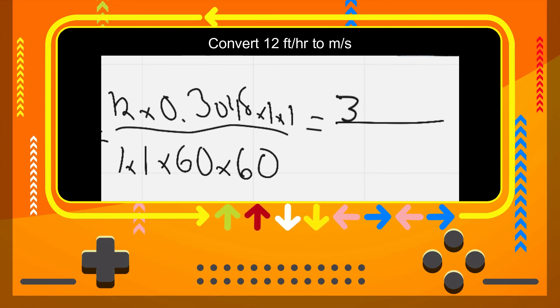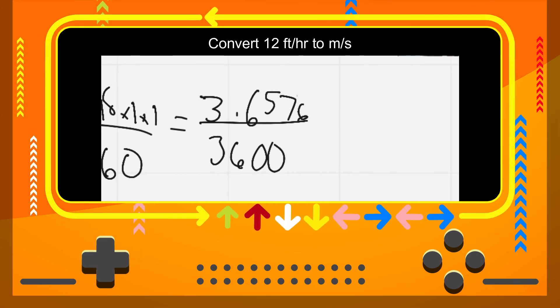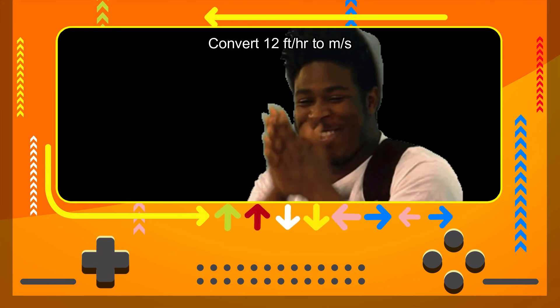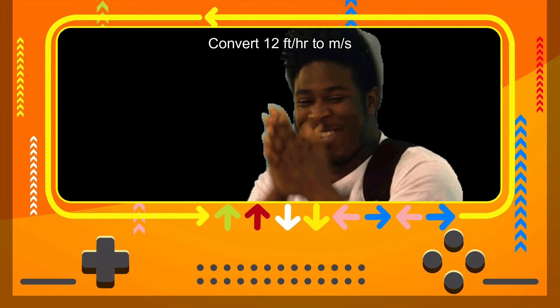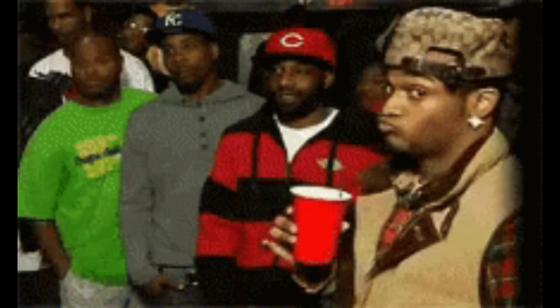So now top number is going to be 3.6576, my bottom number will be 3600. And then from here once you multiply across, I just need to divide. So I'm going to divide 3.6576 by 3600, and what does that give me? My final answer is going to be 0.001016 meters over seconds.